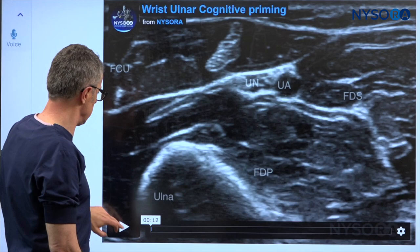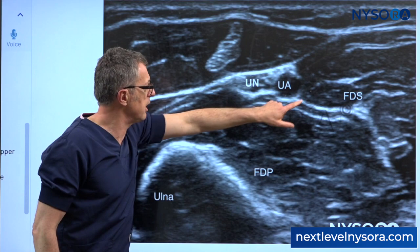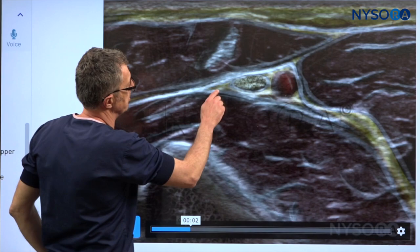As we continue, here we can see another reverse ultrasound anatomy animation — an amazing tool that helps you recognize and memorize sono-anatomical patterns. Here we can see the ulnar nerve and the artery, and again we're really interested in the tissue sheets around them, because that is where you want to be with your needle.